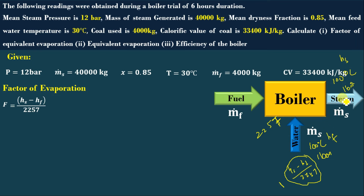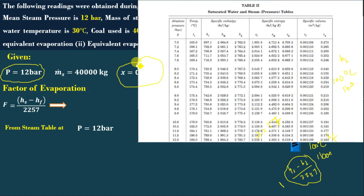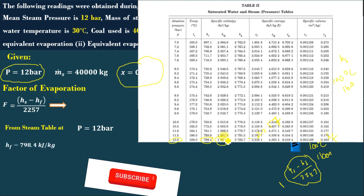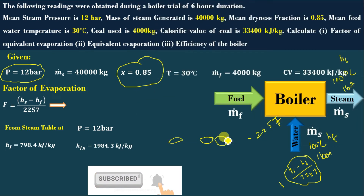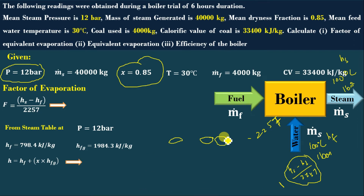Now we need to find out the outlet steam condition. The pressure is 12 bar and it is wet steam with dryness fraction x = 0.85. For wet steam, the enthalpy is H = Hf + x·Hfg. For 12 bar, Hf = 798.4 kJ/kg and Hfg = 1984.3 kJ/kg. Substituting: H = 798.4 + 0.85 × 1984.3 = 2485.05 kJ/kg.